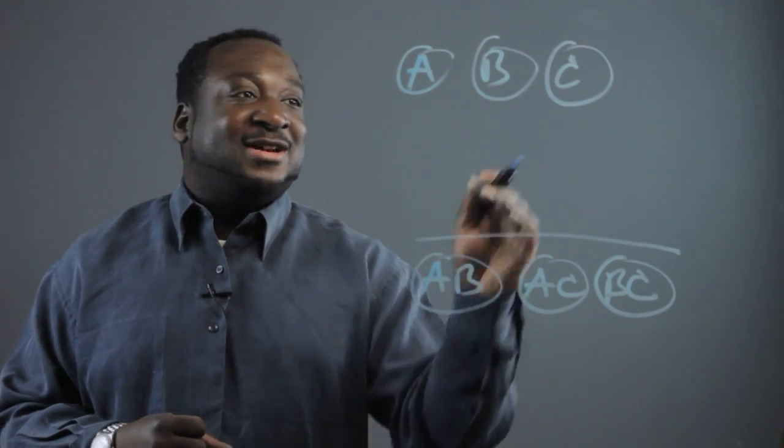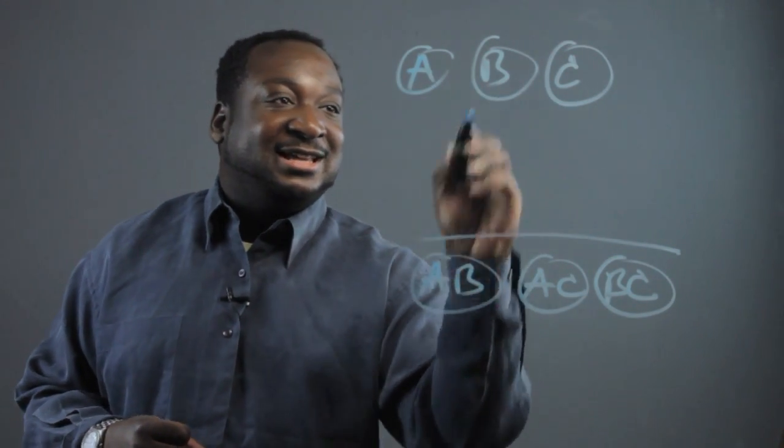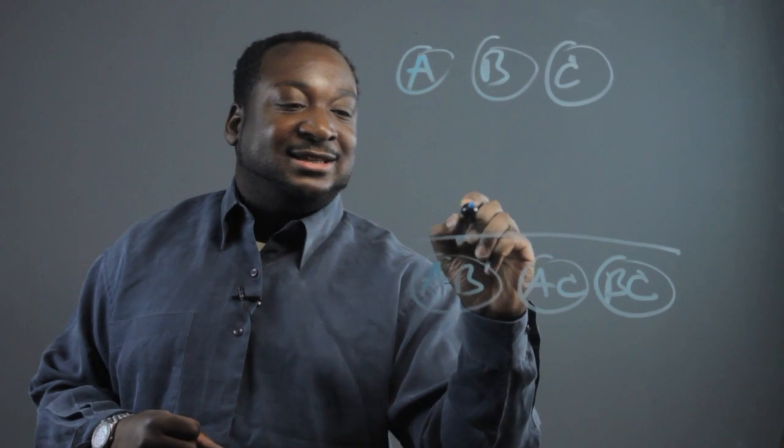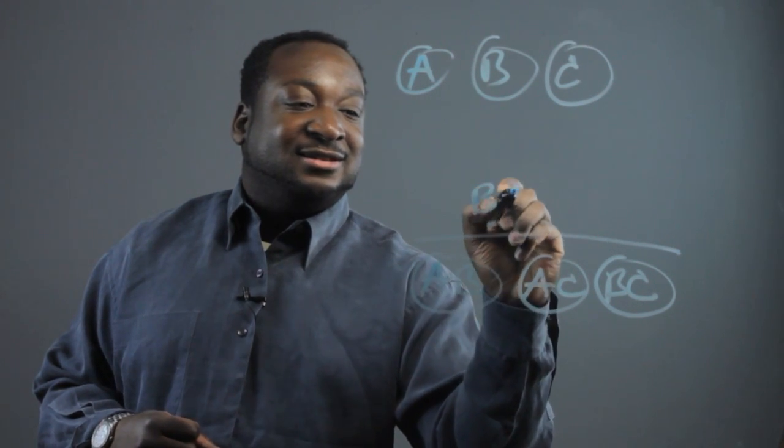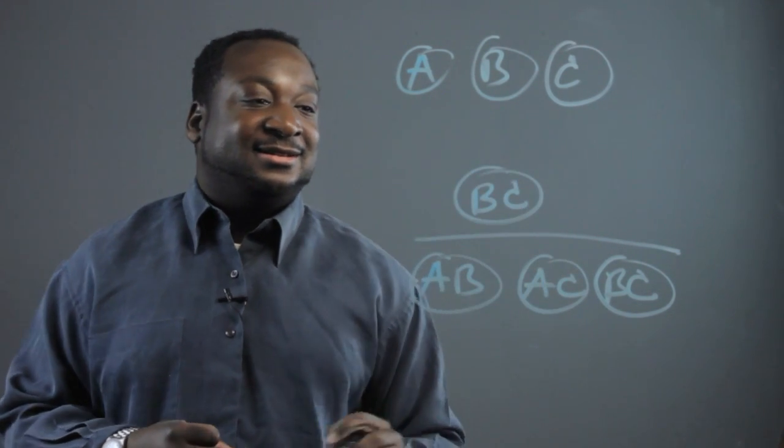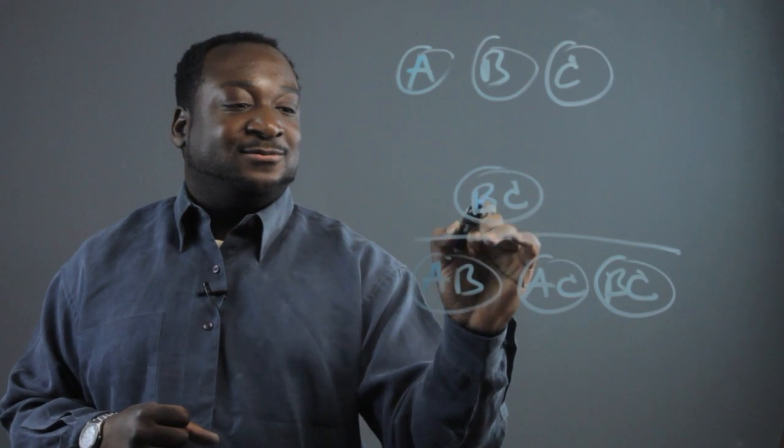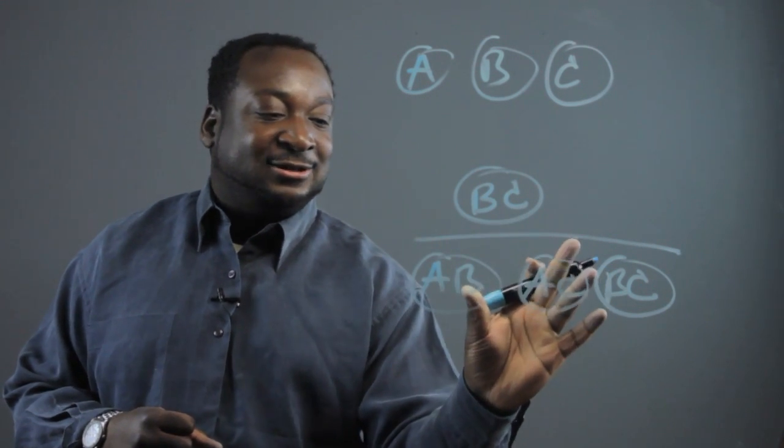Okay, now the combination we're trying to get is B and C. There's only one way to do that. So, there's one out of the total number.